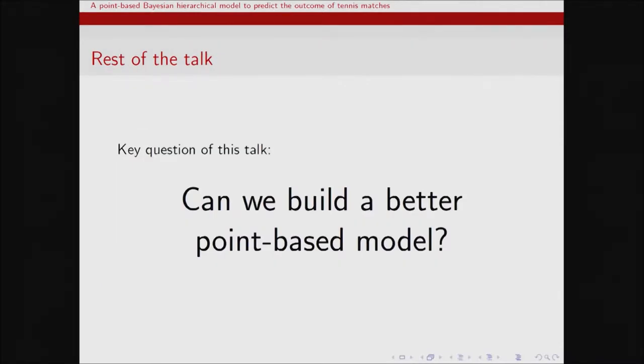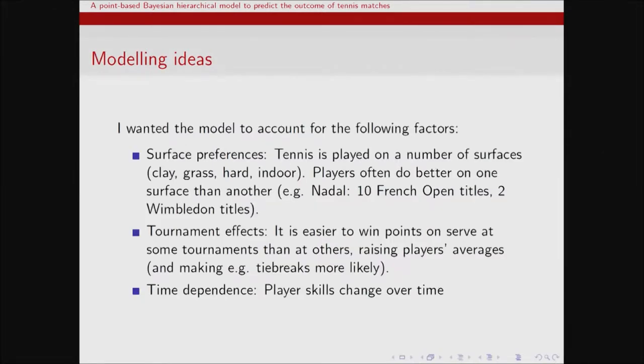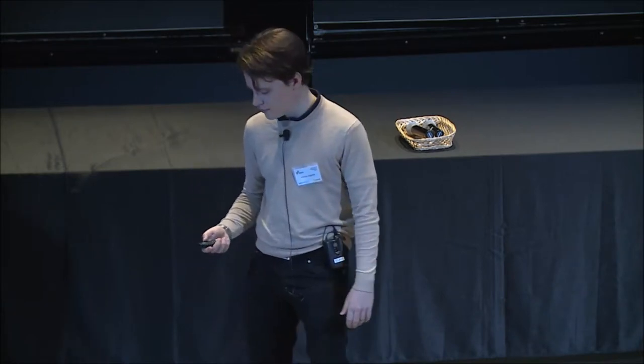What I wanted to do is basically build a better point-based model. Can we improve on these models, or are they just doomed to be worse because of the IID assumption? What I really wanted to include are surface preferences. It's quite well known that some players do better on some surfaces than others — Nadal has 10 French Open titles on clay but only two at Wimbledon on grass. He's clearly particularly good on clay, and that's the case for many players. Then there are also tournament effects — at some tournaments it's just easier to win points on serve than others. And also there's a time dependence — player skills do change over time, and I wanted to model that as well.